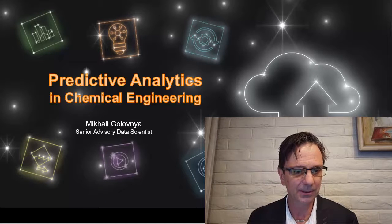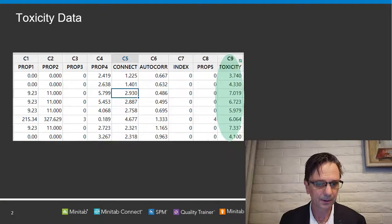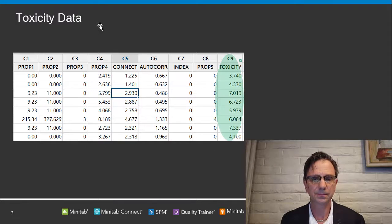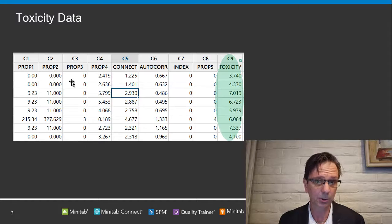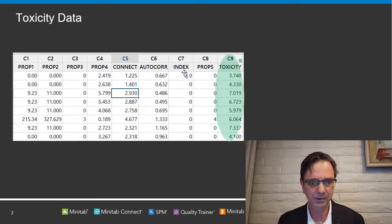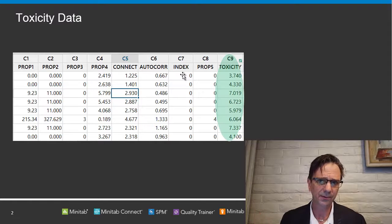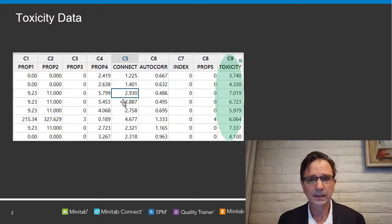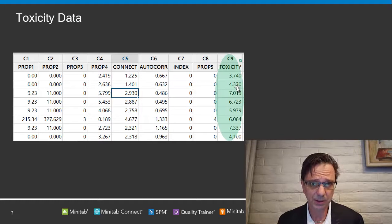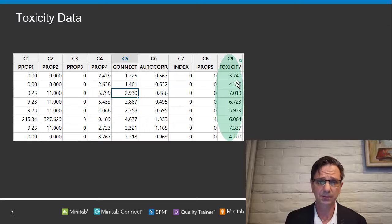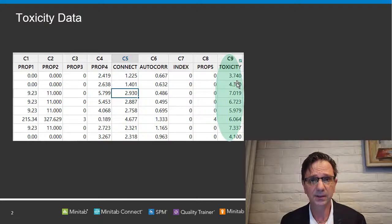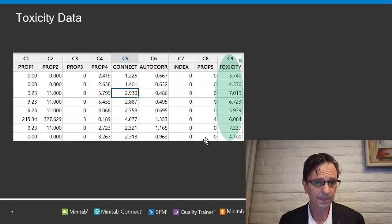Let me start by introducing a straightforward data set. Here we have toxicity data on about 500 different substances. Each substance is described by a certain set of chemical properties, a certain connectivity, a correlation index, and other features. There's eight of them altogether, and each substance has been measured in terms of its toxicity. In this case, we have a classical application of predictive analytics where we would like to predict toxicity based on the corresponding inputs.